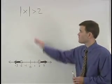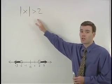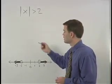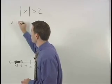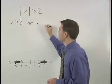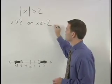So if we're given this absolute value inequality, we can split things up into two separate inequalities. Either x is greater than two or x is less than negative two.